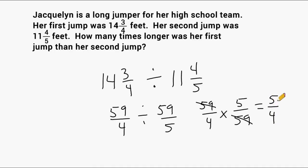And when we rename 5 quarters as a mixed number, we get 1 and 1 fourth. So we would say that Jacqueline's first jump was 1 and 1 quarter times longer than her second jump.